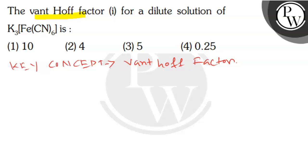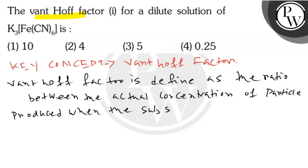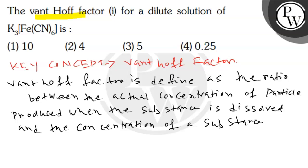Van't Hoff factor is defined as the ratio between the actual concentration of particles produced when the substance is dissolved and the concentration of a substance as calculated from its mass.